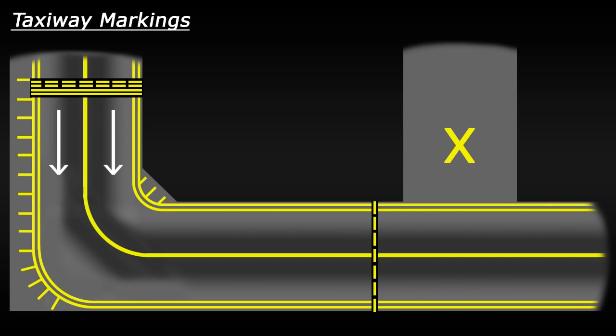Now, just as you approach a runway hold marking, you may also see something called an enhanced center line painted before the hold. This simply adds yellow dashes either side of the taxiway center line to warn pilots that they are approaching a runway hold point.